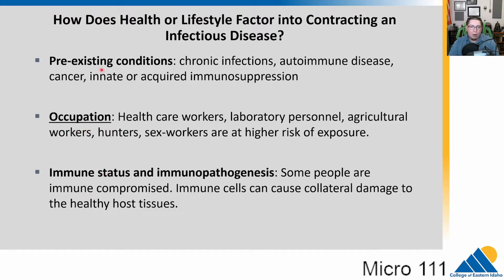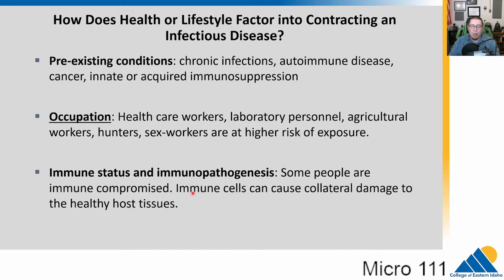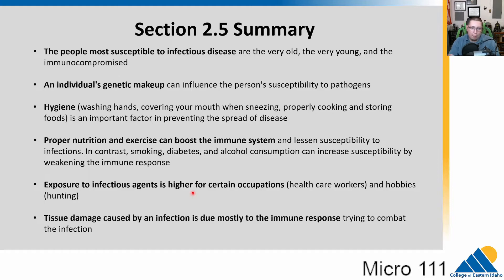Immune status is a big one — immunocompromised individuals can be hurt by simple infections that healthy people handle easily. Our immune system itself can cause collateral damage. For example, hepatitis virus infects the liver and the immune system starts killing liver cells, which causes cirrhosis of the liver. Make sure you know some examples of those.